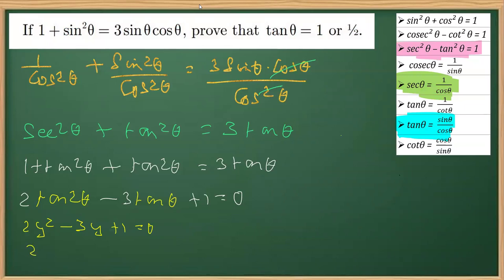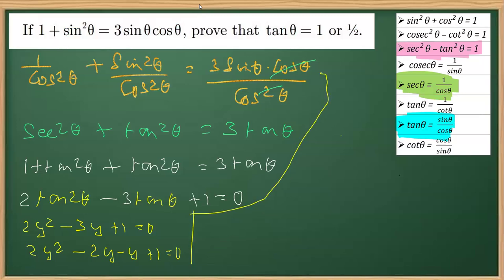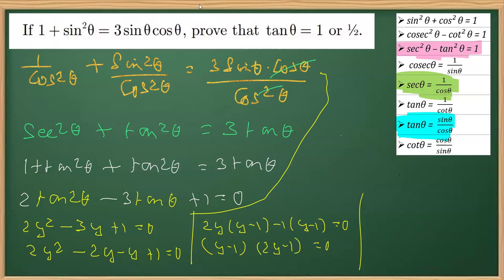Now I'm going to do middle-term factorization, splitting 3y as 2y minus y: 2y² minus 2y minus y plus 1 equals 0. Taking 2y common from the first two terms gives y minus 1, and taking minus 1 common from the last two gives y minus 1. So we get (y minus 1)(2y minus 1) equals 0. Equating each factor with 0 gives y equals 1 and y equals half.